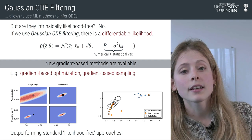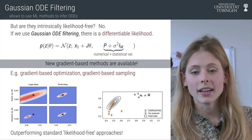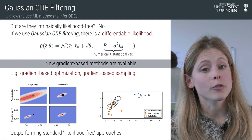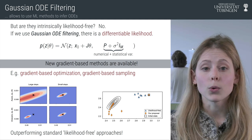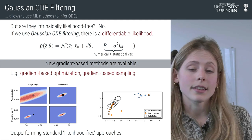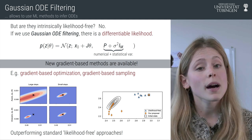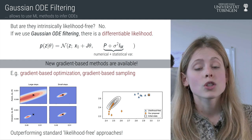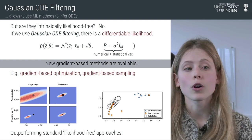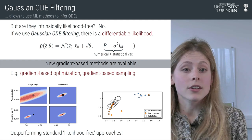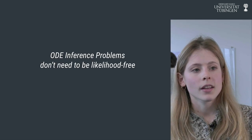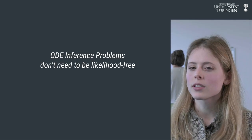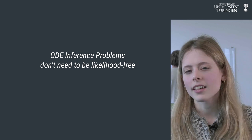On the right we compare gradient-based sampling in orange and likelihood-free sampling in blue, and you can see that the orange dots move much faster to the mode compared to the blue dots. So we can outperform standard likelihood-free approaches. So if you think your problem doesn't have a likelihood, think again.